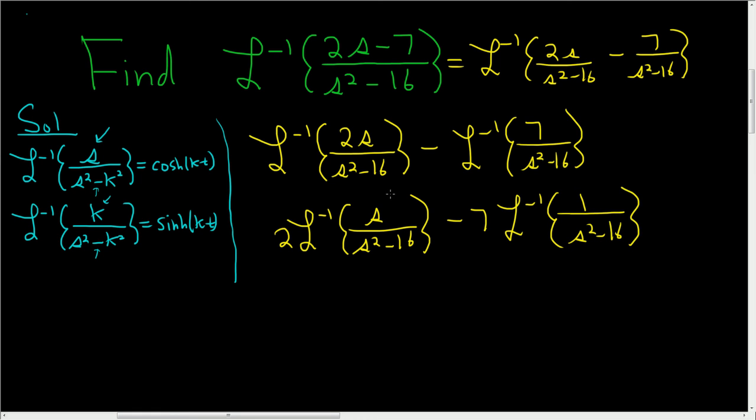Almost there. Okay, so here we have an s. That means we're going to get a cosinch. And here k is 4, right, because 4 squared is 16.